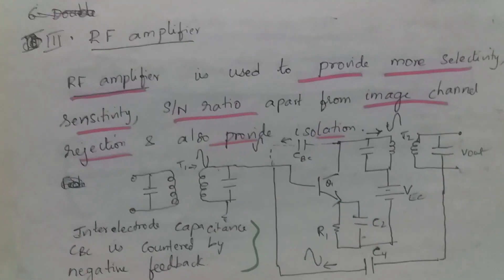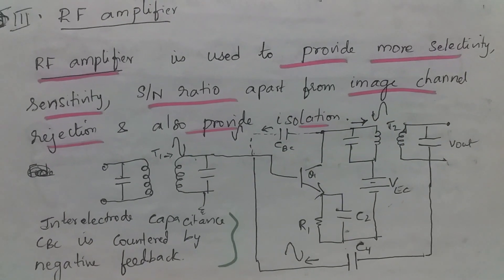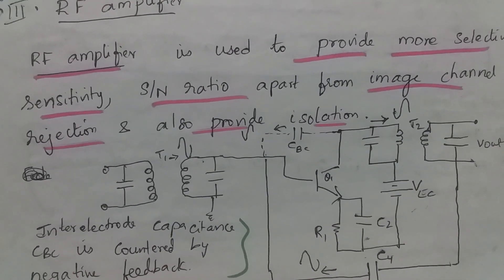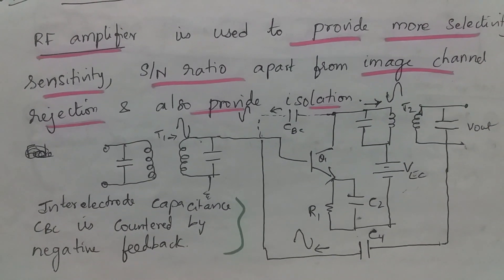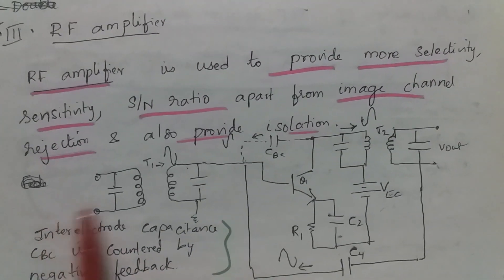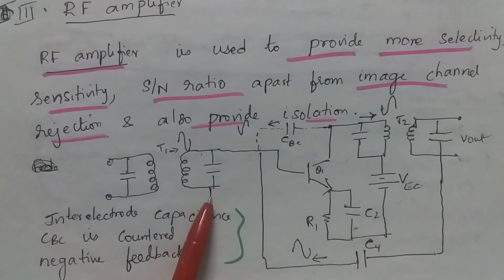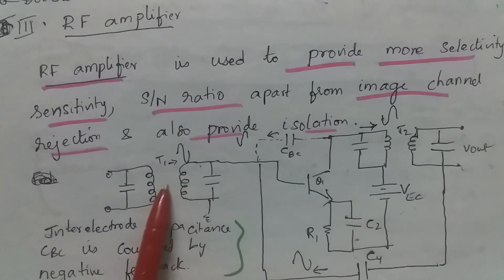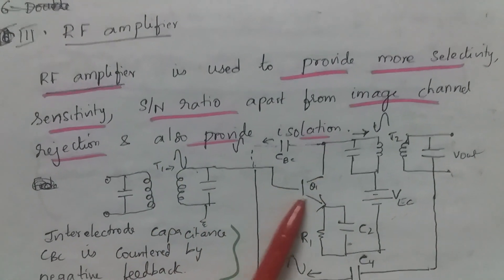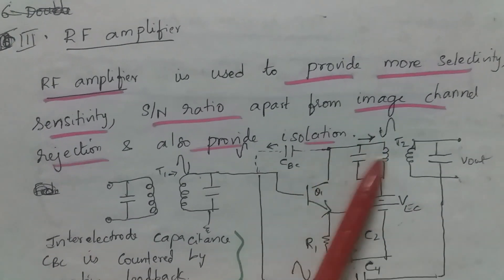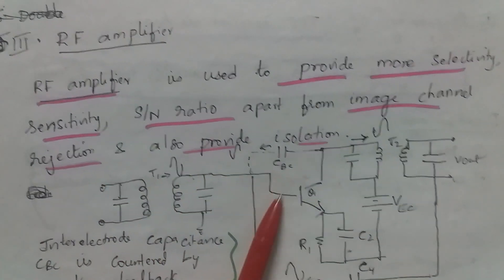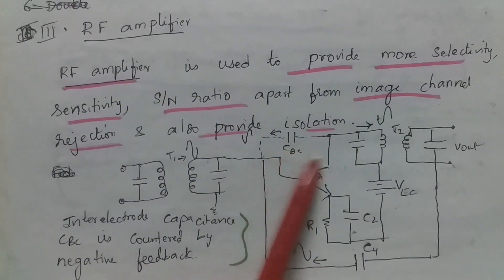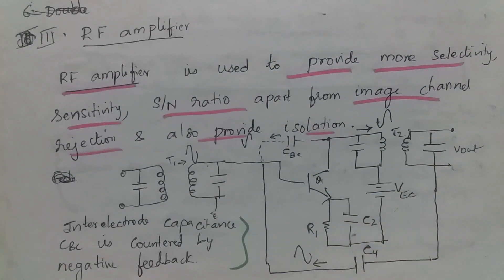RF amplifier is used to provide more selectivity, sensitivity, S by N ratio, apart from image channel rejection. It also provides isolation. The signal applied is mutually coupled to the secondary of the transformer and applied to the base of the transistor. During the positive cycle, it is forward bias. This conducts, there is output. During the negative cycle, this is cutoff. There is an internal electrode capacitance CBC and this is countered by having a negative feedback.